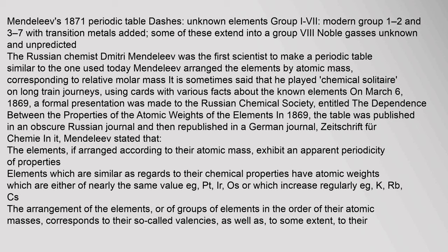On March 6, 1869, a formal presentation was made to the Russian Chemical Society, entitled 'The Dependence Between the Properties of the Atomic Weights of the Elements.' In 1869, the table was published in an obscure Russian journal and then republished in a German journal, Zeitschrift für Chemie. In it, Mendeleev stated that the elements, if arranged according to their atomic mass, exhibit an apparent periodicity of properties. Elements which are similar as regards to their chemical properties have atomic weights which are either of nearly the same value, e.g., Pt, Ir, Os, or which increase regularly, e.g., K, Rb, Cs.